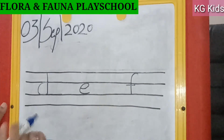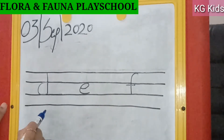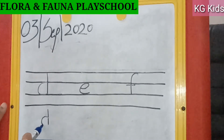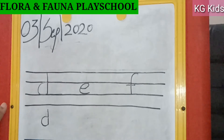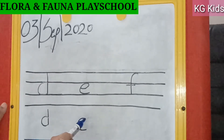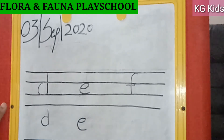We have to draw a standing line for D, and then touch a half circle. Same way, we have to make a semi-circle for E, and touch a small curve — we have to touch it.